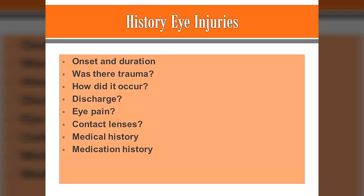When doing your history of present illness, it's really important to ask when it happened, how long it has occurred, and if there was any trauma. If there was trauma, you immediately refer them. Ask how did it occur — were you coughing, sneezing, straining with a bowel movement? Have you been constipated? Has your blood pressure been high in the past? Do you have high blood pressure?